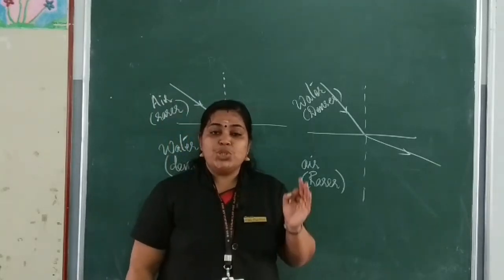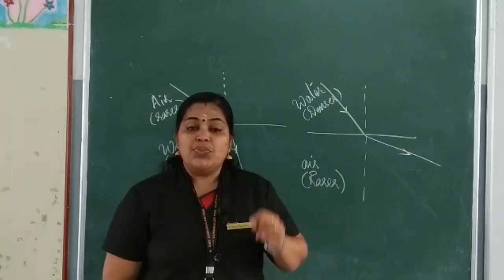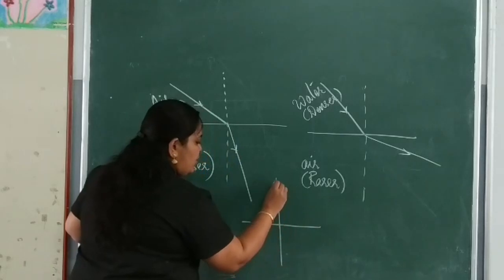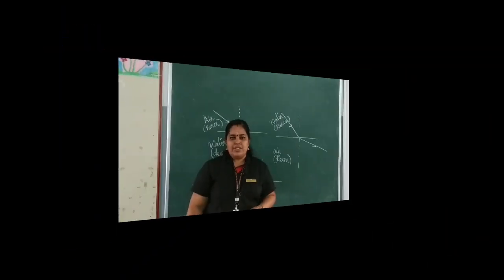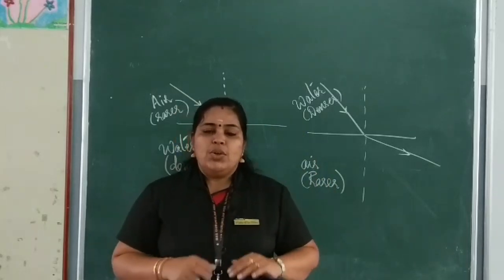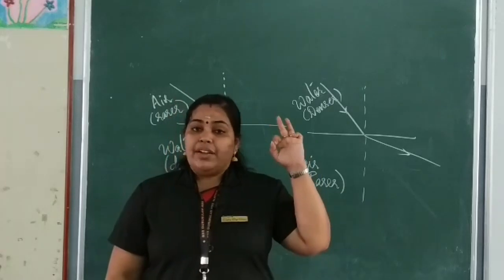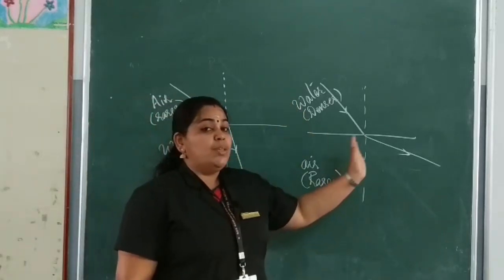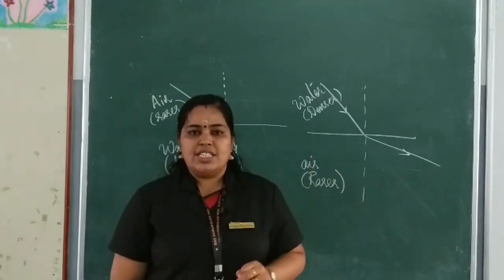For undergoing refraction, the light ray should pass obliquely from one medium to another. What will happen if the light ray moves normally from one medium to another? No deviation takes place — refraction will not take place. So, when a light ray travels normally from one medium to another, no deviation takes place. These three points are very important: rarer to denser — moves towards the normal; denser to rarer — moves away from the normal; normal incidence — no deviation takes place.